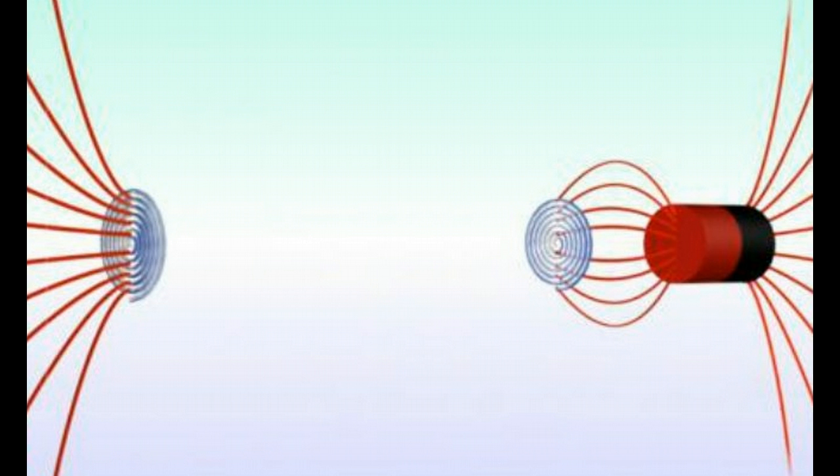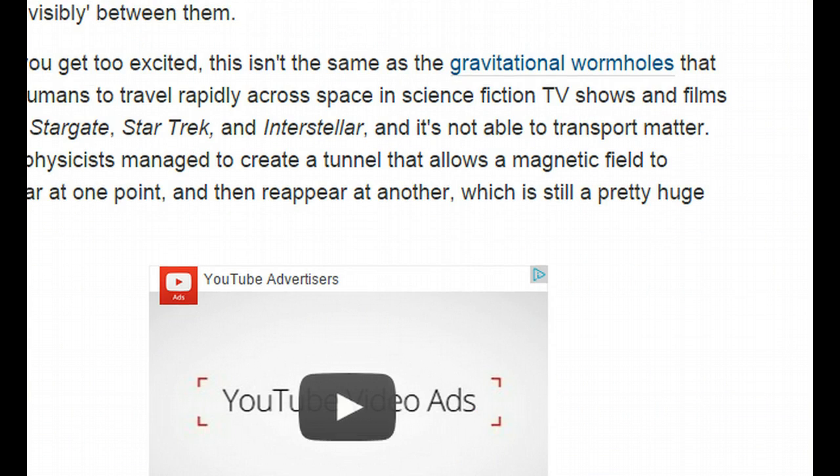Here, the physicist managed to create a tunnel that allows a magnetic field to disappear at one point and then reappear at another, which is still a pretty huge deal, like they state right here.